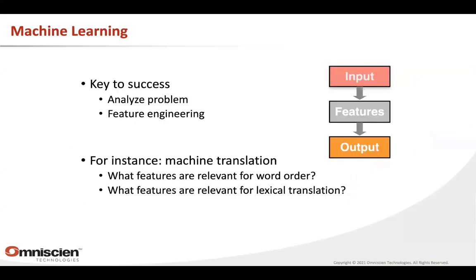So what is machine learning? Basically, you have some input and you want to predict an output — for example, you have an image and you want to predict 'dog,' or you have a sentence in a foreign language and you want to predict a sentence in a different language. The key to success is having some understanding of the problem and coming up with features that are relevant. In language, this at least means breaking things up into words, but it might also include syntactic analysis and so on.